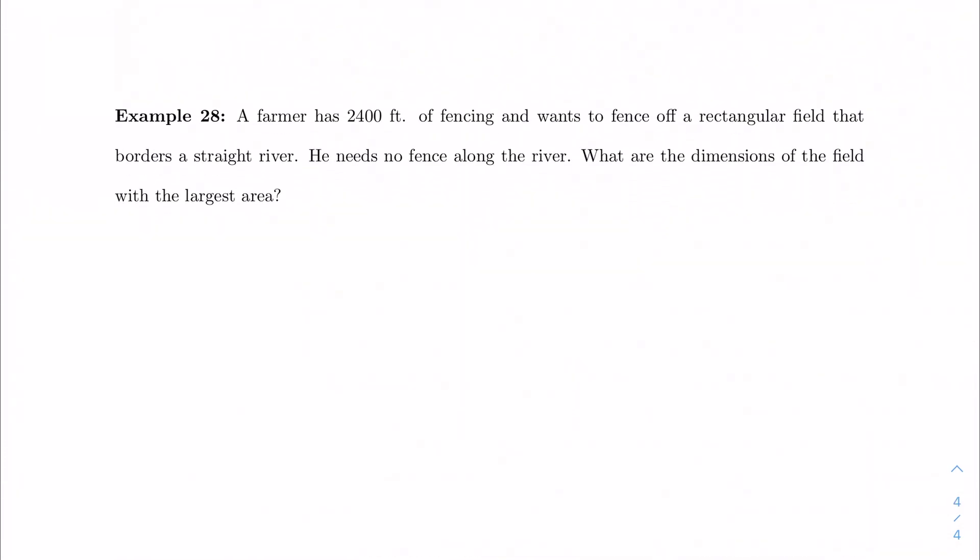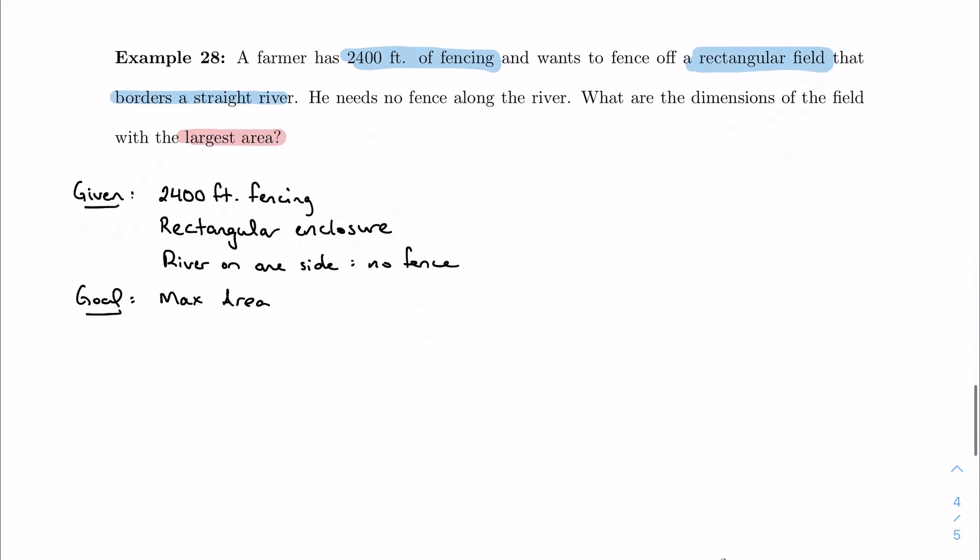Here's one of the classic examples. A farmer has 2400 feet of fencing and wants to fence off a rectangular field. And that rectangular field borders a straight river. He needs no fence along that river. What are the dimensions of the field with the largest area? So again, let's go through our process from the related rates section. What am I given? I'm told that we have 2400 feet of fencing. And I want to make a rectangular enclosure with a river on one side. My goal is to maximize the area.